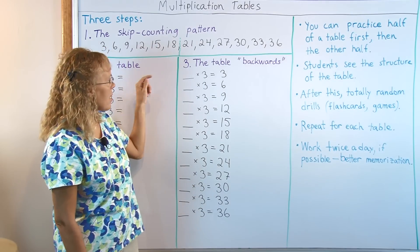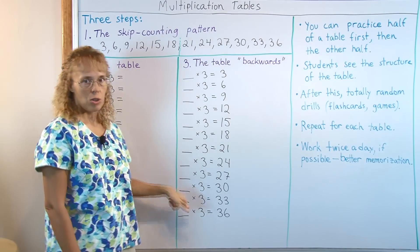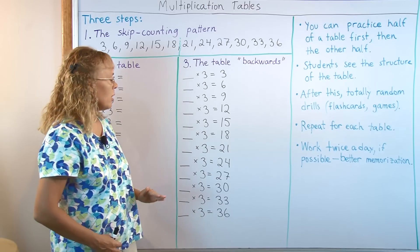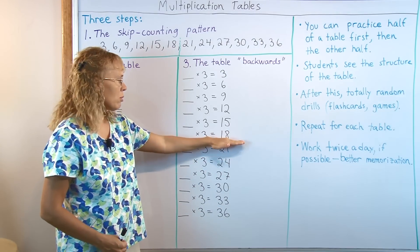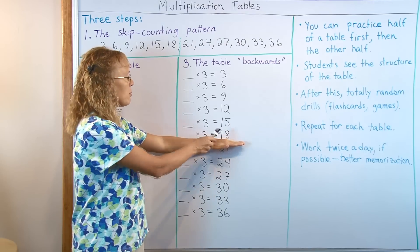And once they understand that 1, 2, 3, et cetera go here, then again it's time to drill randomly. But you can first do the first half of it up to 6 times 3.